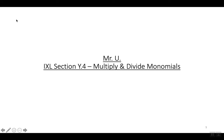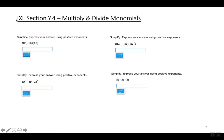This iXL section y4 is on multiplying and dividing monomials. It's a combination of y2 and y3, which were assigned last class. y2 was on multiplying monomials and y3 was on dividing monomials. y4 combines both of them, so you'll have some questions where you're multiplying multiple terms.